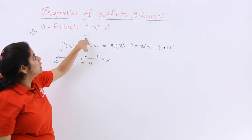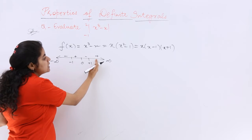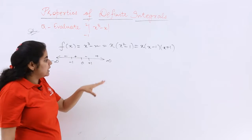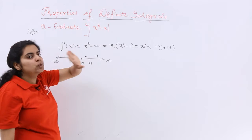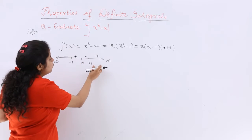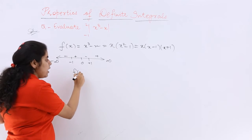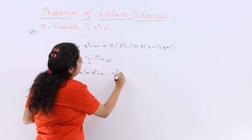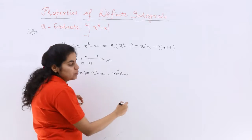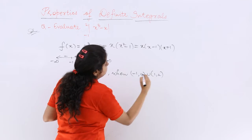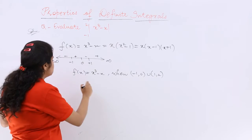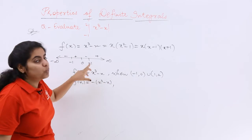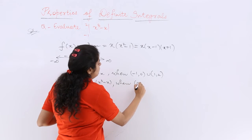Take care that we have the limits -1 to 2, so we only consider up to 2. Where do we have positive signs? From 1 to infinity — meaning 1 to 2 for our purposes — and also from -1 to 0. So f(x) = x³ - x is positive on [-1, 0] and [1, 2], and attains negative values on [0, 1].